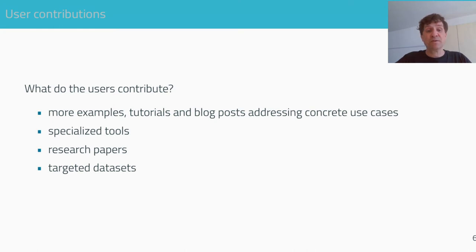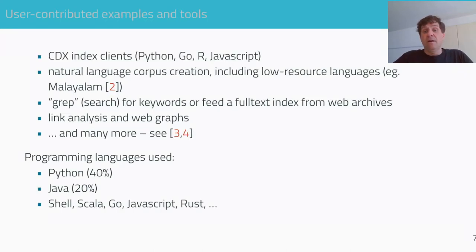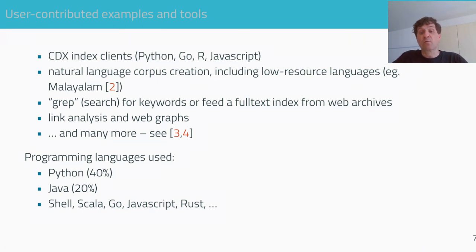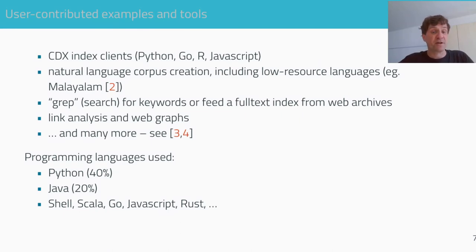Specialized tools, research papers and targeted data sets — including corpora for low-resource languages, tools to grep or search for keywords in WARC or web files, feeds of full-text edits from web archives, link analysis, web graphs and many more. The preferred programming languages are Python and Java, but also Shell, Scala, Go, JavaScript and Rust.